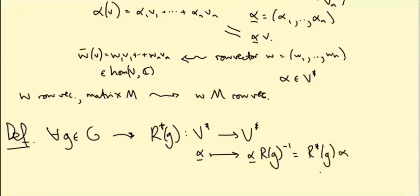So all this messing with underlines and stuff is really just so that I can distinguish between when I'm multiplying by a matrix and when I'm applying a linear map. On the right hand side of this expression, this is R star of G applied to alpha.